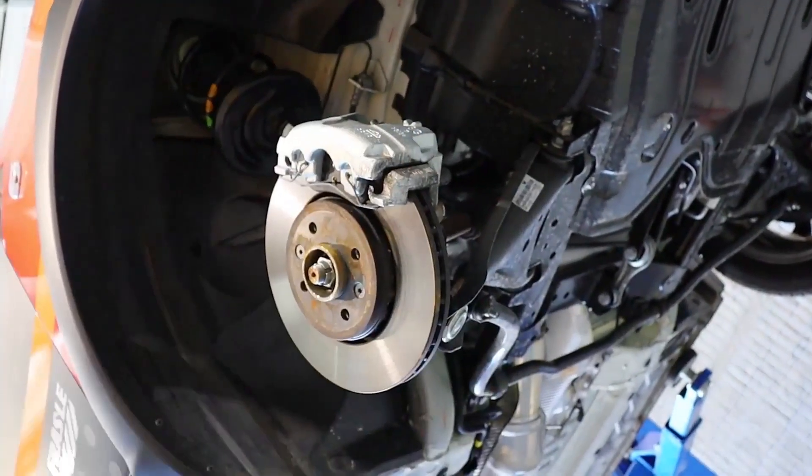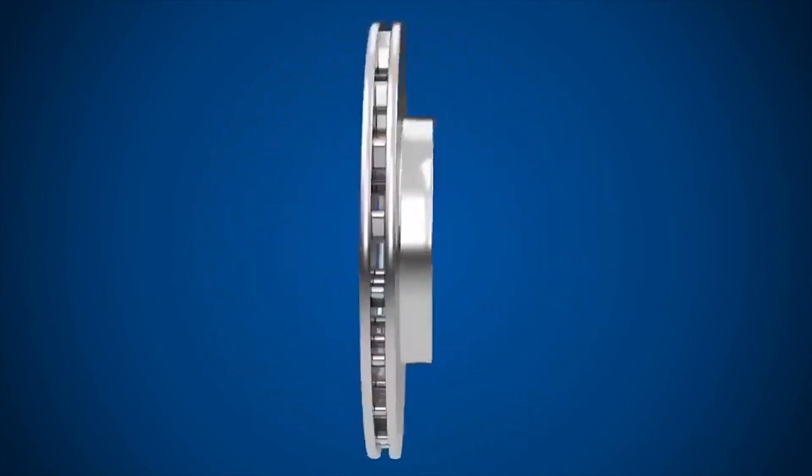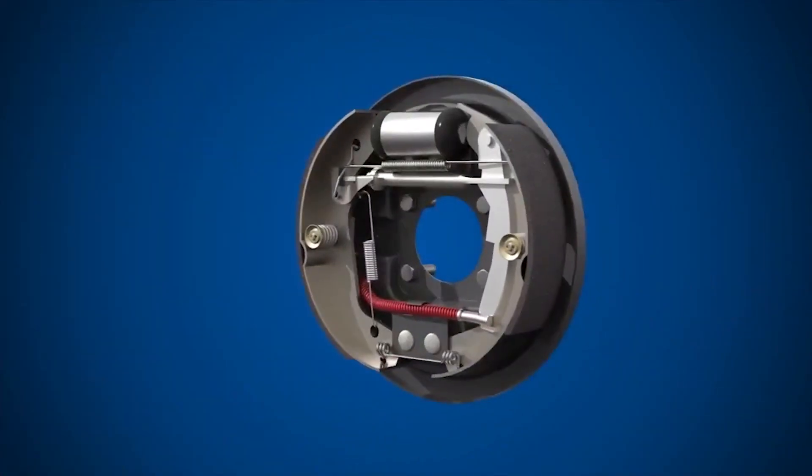One of the most frequently asked questions we receive, why do vehicles often have disc brakes in the front and drum brakes in the back?